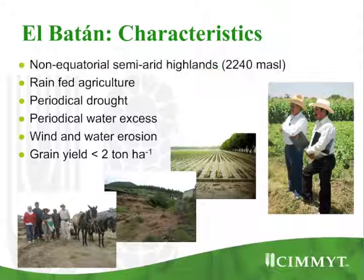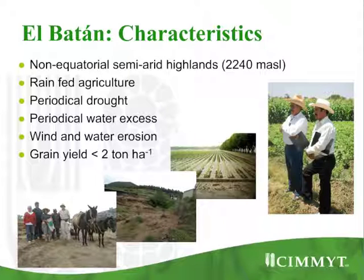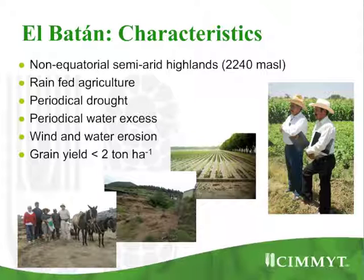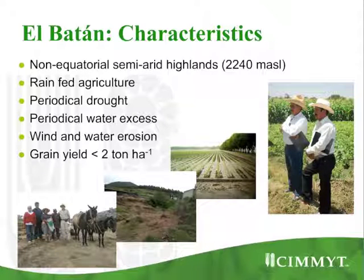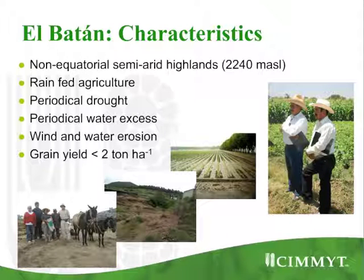I'm going to discuss briefly the characteristics of the El Batán area. It's a non-equatorial semi-arid highland area — rain-fed agriculture with periodical drought, periodical water access, wind and water erosion. The overall grain yield for maize is less than two tons per hectare in the farmer field. A typical system there can be maize-bean rotation. There's also some small grain in the system like wheat, barley for the brewery industry, and some oats as feed for the animals.